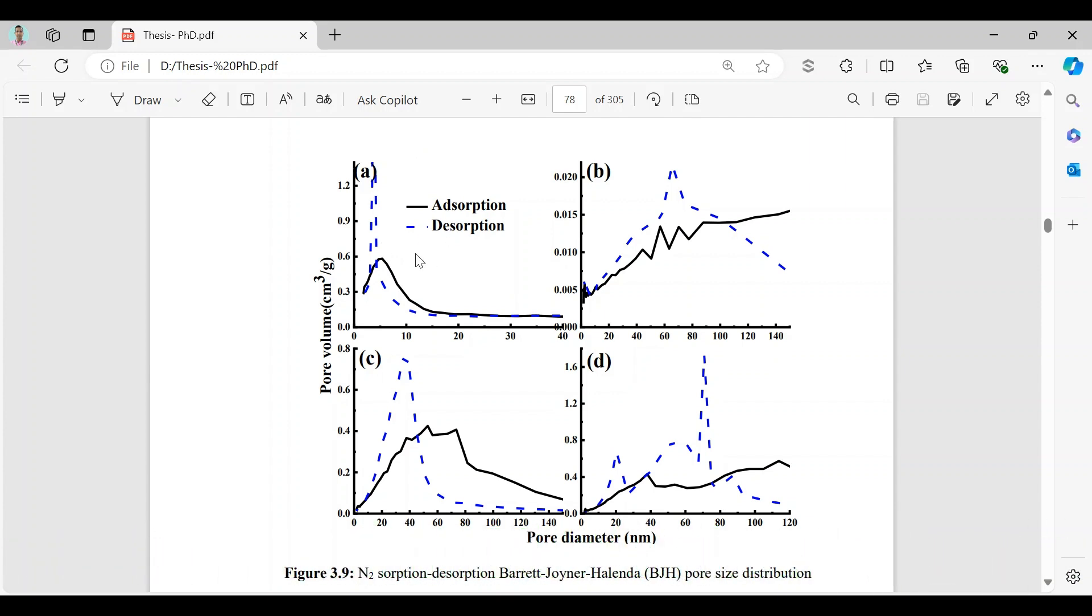Now let us consider case B which is pyrocite. If we consider adsorption pore size distribution curve we see that there are four peaks: 1, 2, 3, 4. Four peaks observed for adsorption distribution curve and one peak observed for desorption distribution curve.